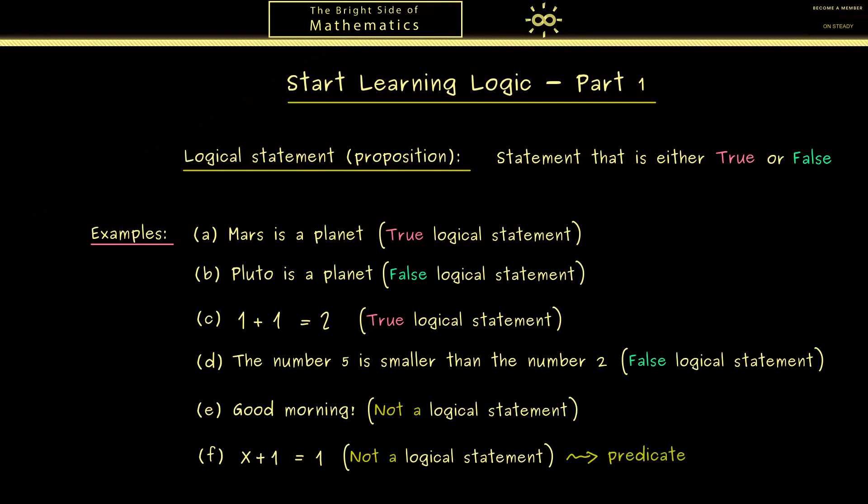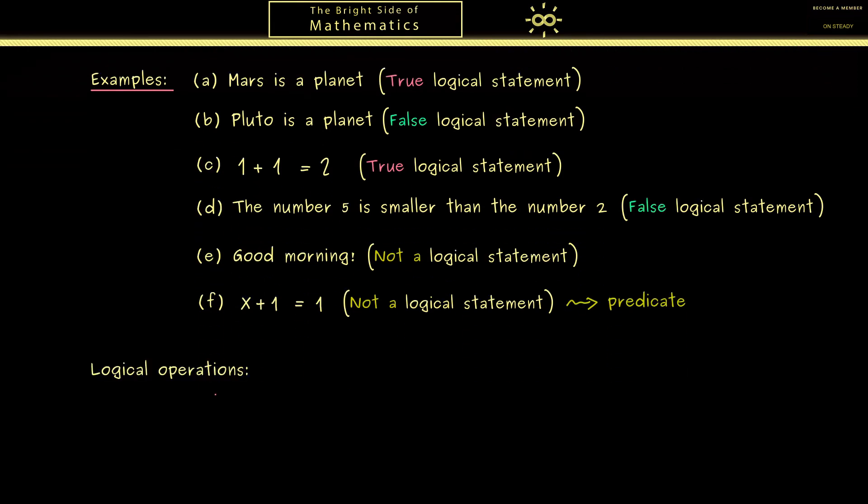Now the next step is when we have such logical statements we also want to combine them. They are just called logical operations and they give us new logical statements. For example the negation is defined for a given logical statement A which could be for example 1 plus 1 is equal to 2. Then the new logical statement the negation of A is denoted by this line in front of A. You should read it as not A and it simply switches the truth value. Therefore the best thing to define such a logical operation is to use a so called truth table where we put in all possible inputs and the corresponding outcomes. Of course here we only have two inputs, A could be either true or false. So the truth value should be switched so not A should be false when A is true and the other way around.